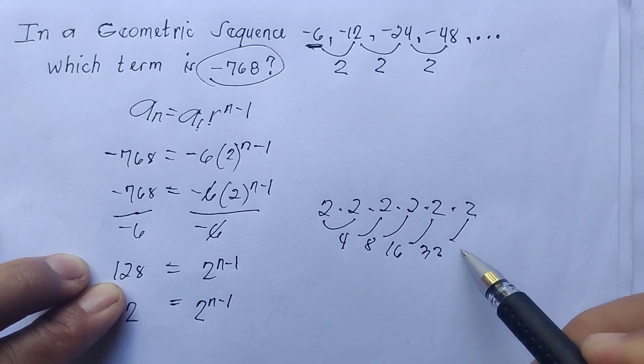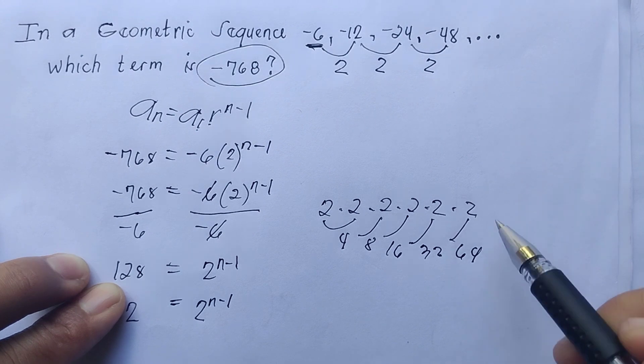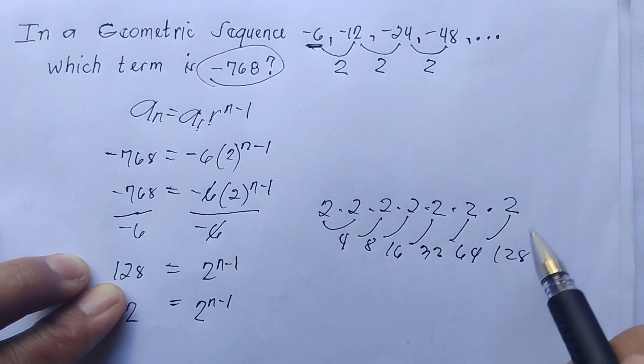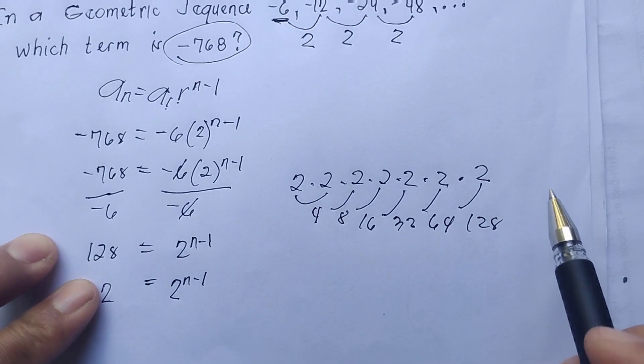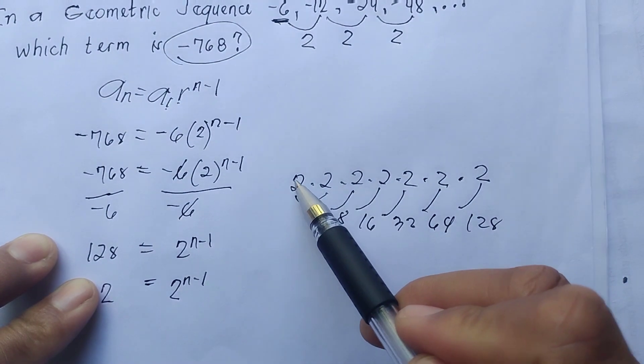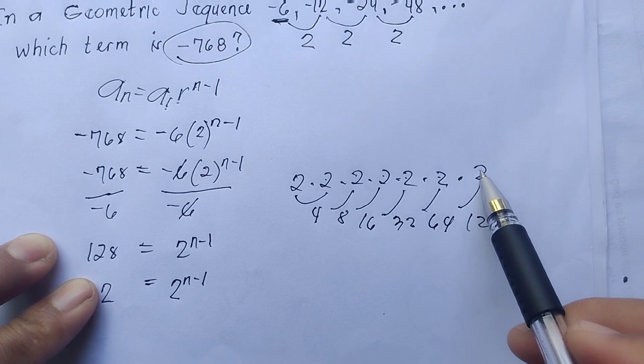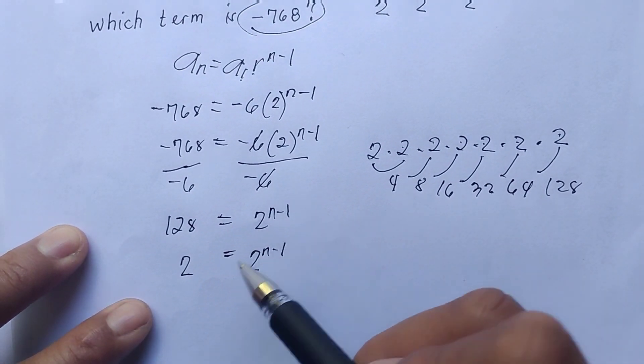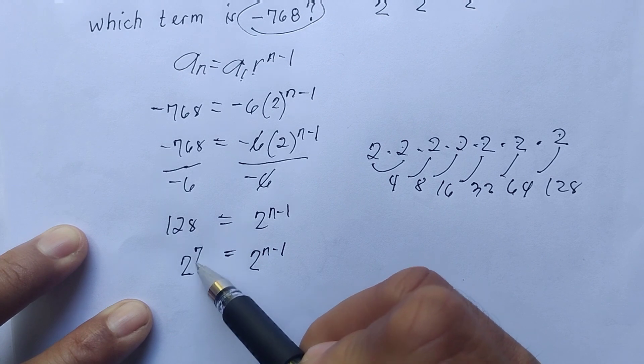Times 2 that is 64, continue times 2 that is 128. We'll count how many 2's are there: 1, 2, 3, 4, 5, 6, 7. Which means the exponent of 2 is 7.